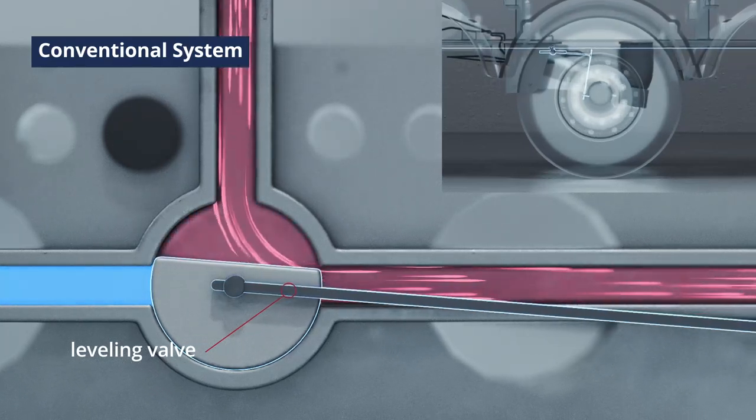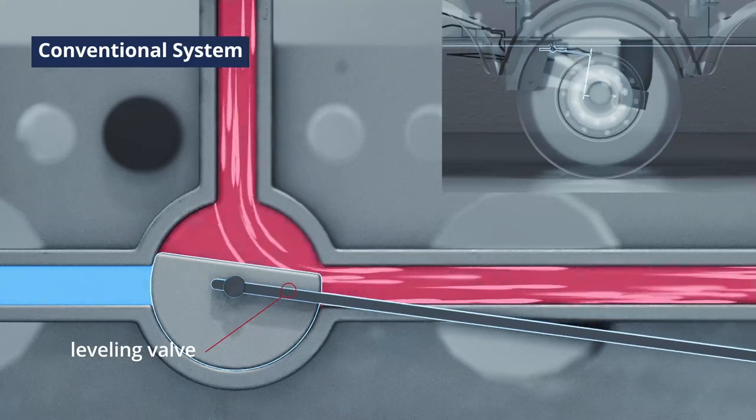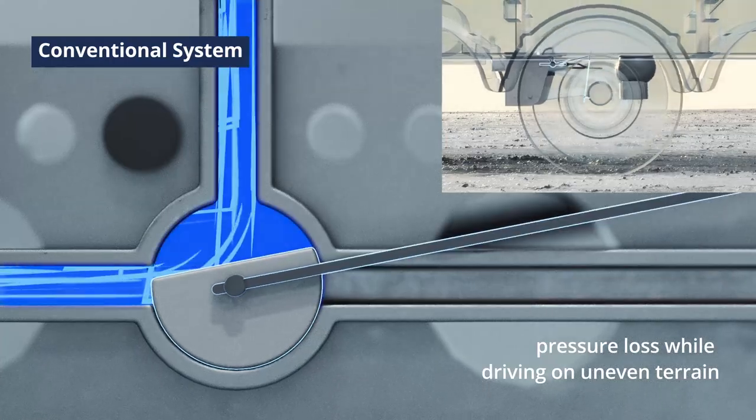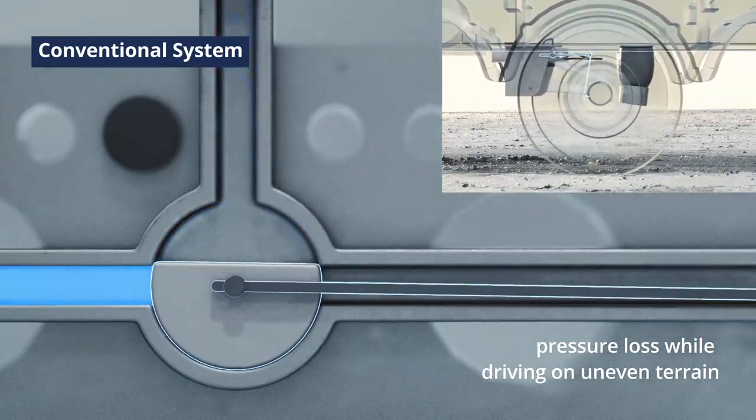If the trailer rises too high, the valve opens again to release pressure. Sure, the system works, but it's not only slow, you also constantly lose pressure when driving on uneven terrain.